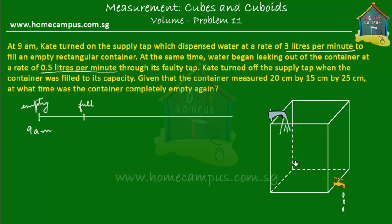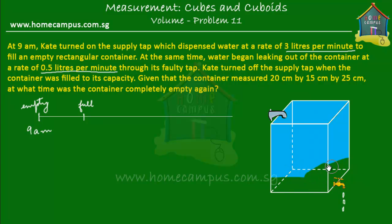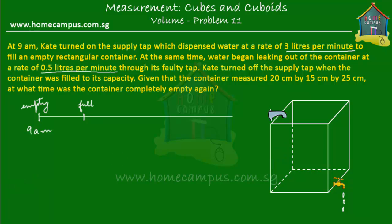When the container was filled to the brim, Kate turned off the supply tap. So the supply tap was off but the faulty tap was still on. The leaky faulty tap was still leaking water out of the container. Then there came a point of time when the container was empty again — no more water in the container. That's the sequence of events.